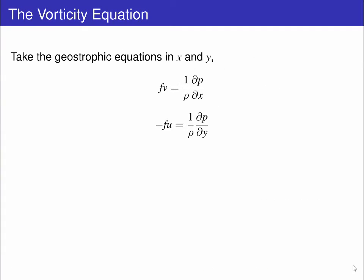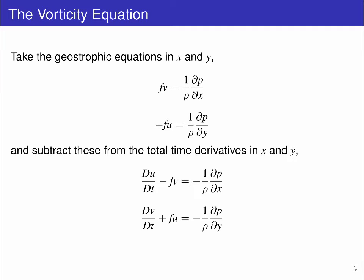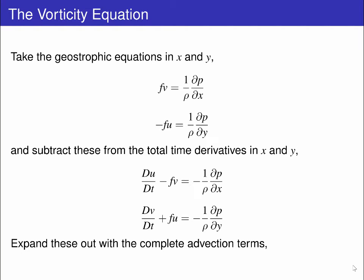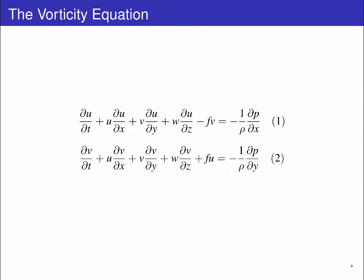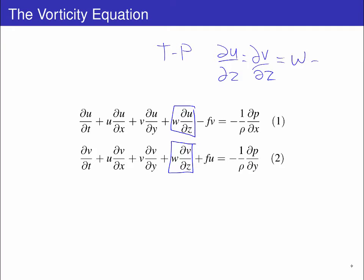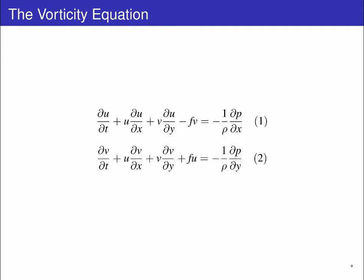We can begin with the Geostrophic Equations in x and y, and subtract these from the total time derivatives of the flow in the x and y directions. We can expand these out to get equations with the complete set of advection terms. The first terms we can get rid of are vertical velocity times the vertical shear, which is the vertical gradient of the horizontal velocity. We can do this because we are assuming the vertical velocities are small, or that the Taylor-Proudman theorem is in effect, in which case both the vertical velocity and the vertical shear are zero. Either way, we are only interested in the horizontal velocities within this thin, wide flow.